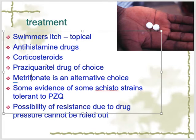We give praziquantel in a single dose or divided dose, with one more repeat after six to eight weeks. One more drug available is oxamniquine, sold under the brand name Vansil — it is also an anti-schistosomal agent. Remember, praziquantel is the drug of choice. Depending on whether the patient has CNS involvement or other conditions, we manage those supportively or symptomatically as well.